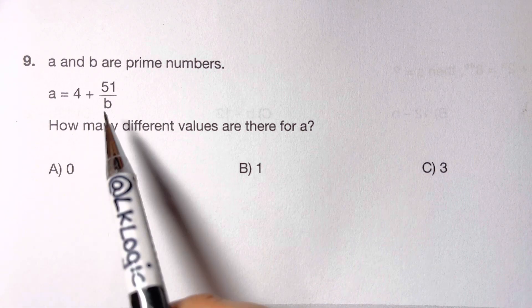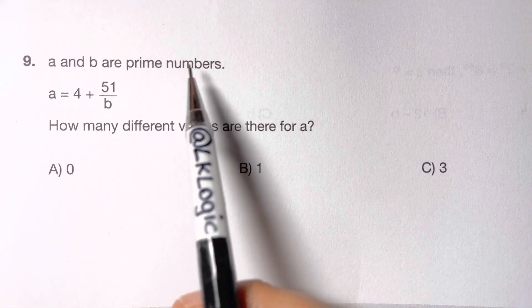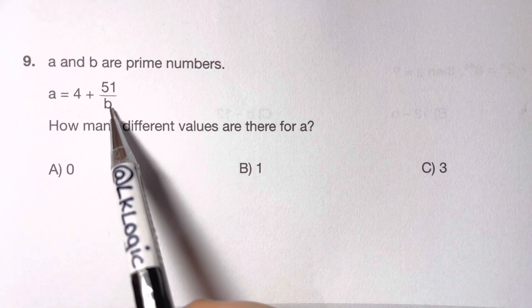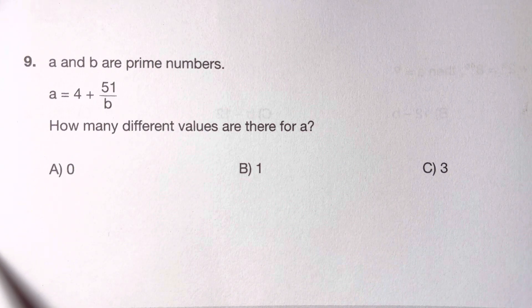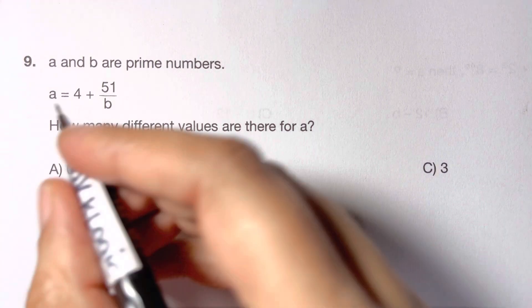What we are going to do is we are going to estimate the values of B. As they have already said, A and B are prime numbers. We are going to estimate some prime numbers for B which will give us the answer as a prime number. So let's estimate.